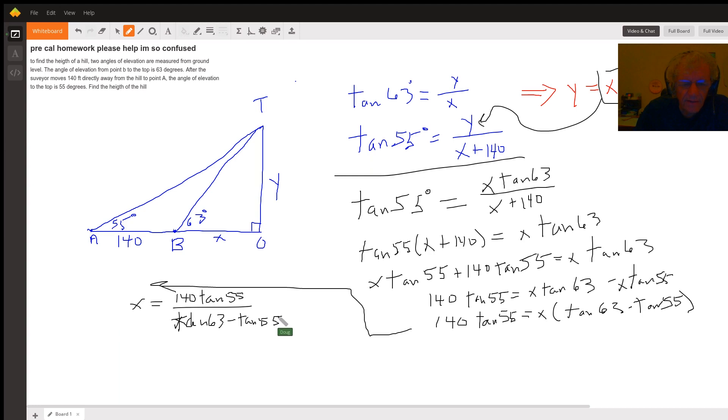So perform that calculation on your calculator, get a value for x. Let me write this here. Whatever value you get for x, you'll substitute back into right here. But you know, I don't know if you'll be able to see that. Let me move this down here, and you'll get the height to the hill. There you go.